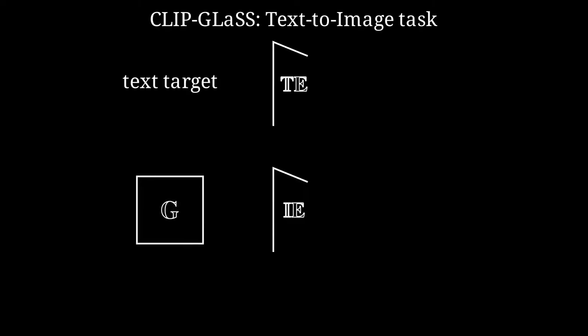In our proposed framework, CLIP Glass, for the text-to-image task, we use a target text, an image-generative architecture, and CLIP's encoders. We firstly compute the embeddings of the target text using the text encoder.